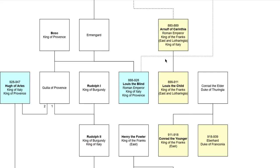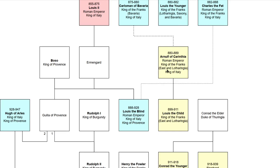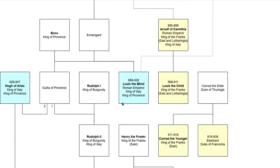Arnulf of Carinthia didn't live too long and didn't manage to conquer much of the rest of the realm. Eventually he was succeeded by his son, Louis the Child, although Arnulf for some time had attempted to make a couple of his illegitimate sons more prominent in the succession, but ultimately it went to Louis the Child. Meanwhile, Louis the Blind managed to expand from his realm of Provence to become king of Italy and achieve the imperial title.